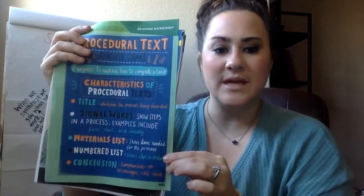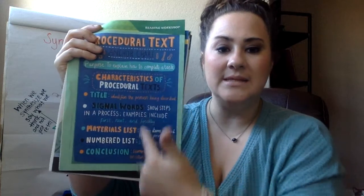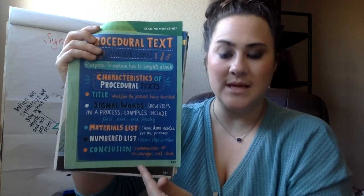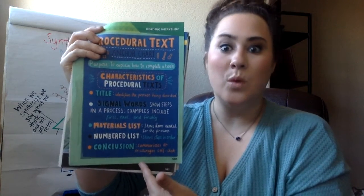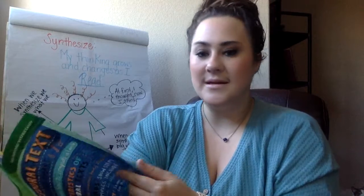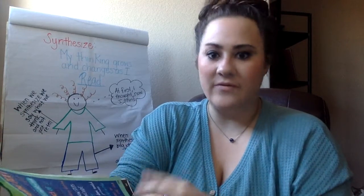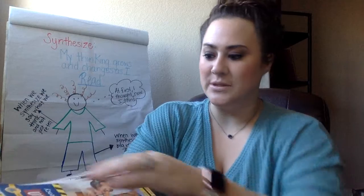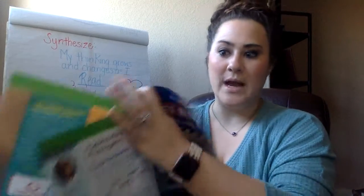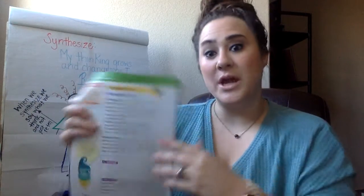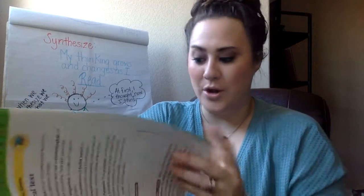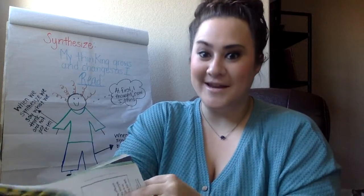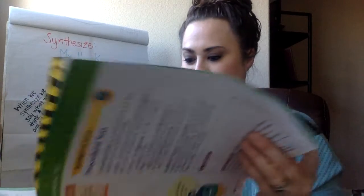So I want you to go back through our safety plan and see which of these characteristics were there, and then list them for number one, because we do know that this is a procedural text. I just want you to point out which characteristics help the reader know that it is a procedural text.